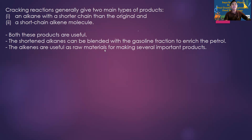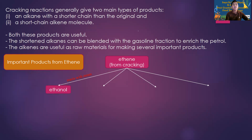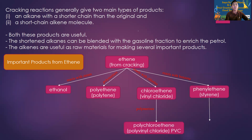The shorter chain can be blended with gasoline fraction, and again they are useful as raw material in the domain for making important products. The ethylene is a polyphenine chloride, and the phenyl is a polyphenine chloride. What do you think about PS?